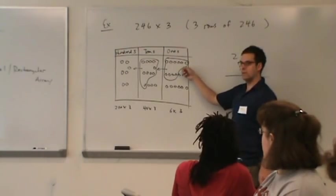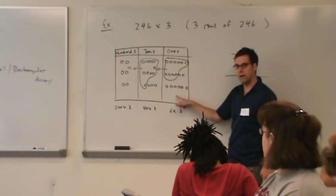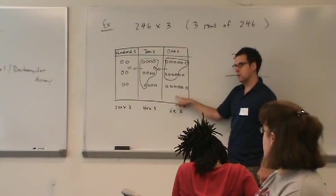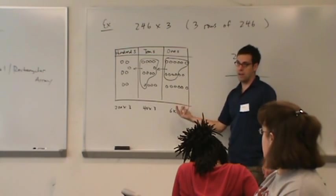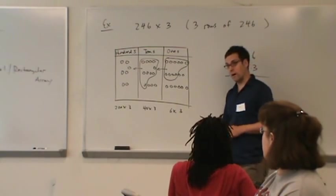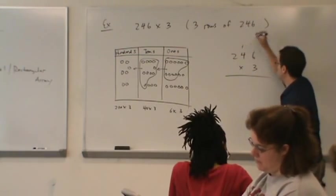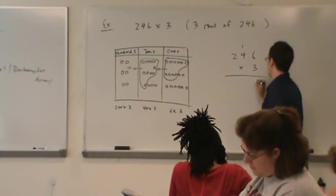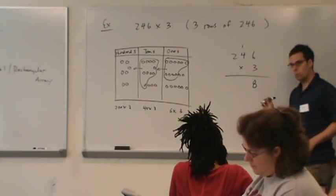What was the first thing we did mathematically? We took six ones and multiplied it by three. Six times three gives us 18. And then we realized that 18 is 1 ten and 8 ones. That's why a one goes in the tens place and an eight goes in the ones place.